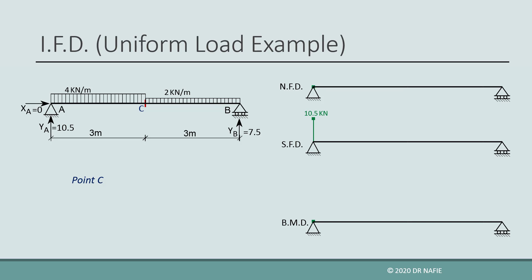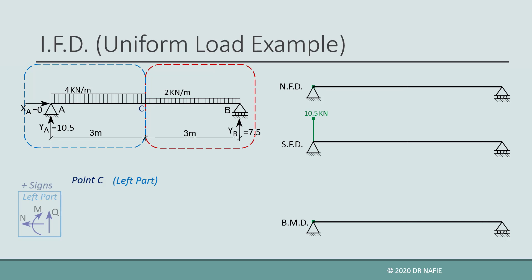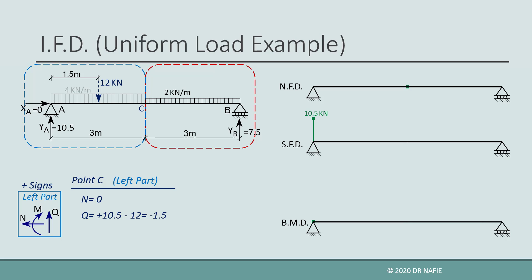We just evaluate the internal forces at point C. We follow the same procedure by dividing the beam into two parts at point C and working on the left part. To simplify the calculations, we convert the distributed load in the left part to an equivalent concentrated force, which will be 12 kilonewtons located at 1.5 meters from point A. The normal force will be zero as before. The shear force will be the sum of all the vertical forces — positive YA and the negative 12 kilonewton equivalent force — giving a value of negative 1.5 kilonewtons for the shear. We draw the value in the shear diagram and connect it to the value at point A using a straight line.